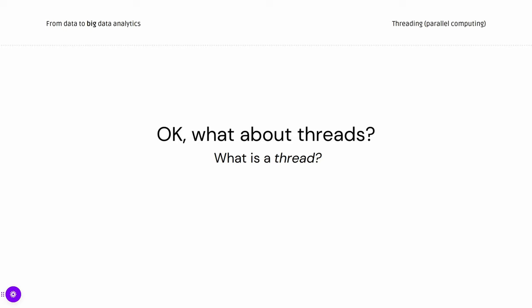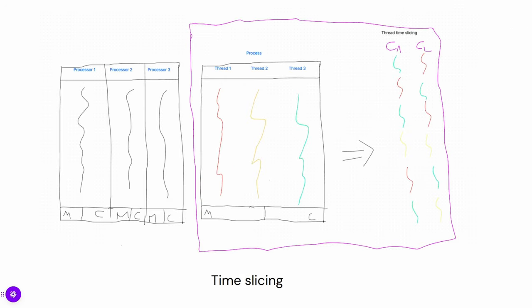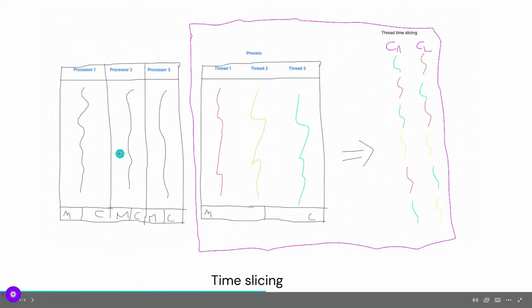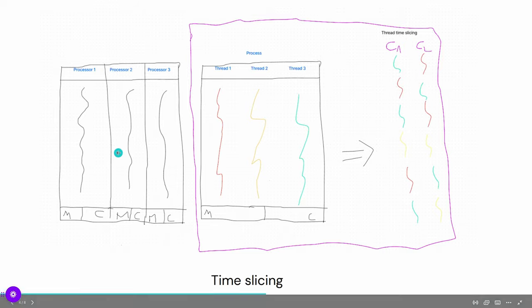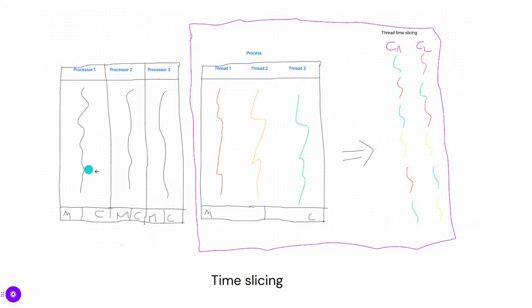Compared to threads, a thread is just a running sub-program. One process can start as many threads as you want and manage them, but the process itself is actually managed by the operating system. To see more clearly what the difference is, we can see it here, where we have many processors — on the left is multi-processing, and on the right is multi-threading.